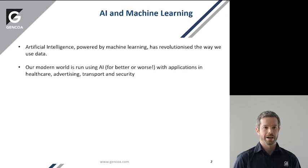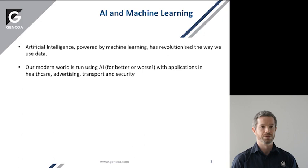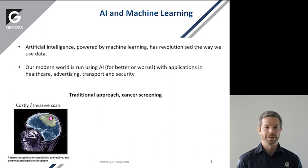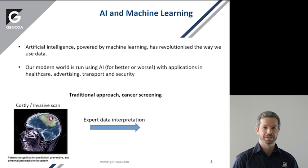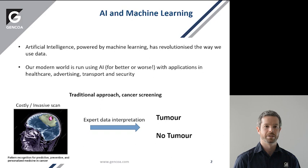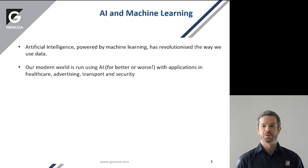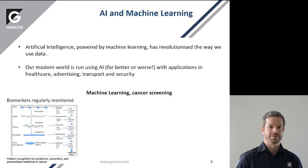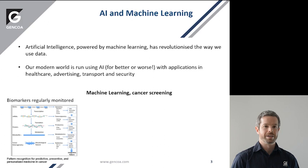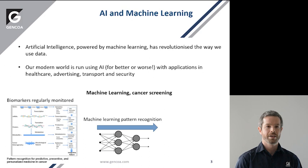To elaborate on that, an example with cancer screening: the traditional approach would be to perform a costly or invasive scan, perhaps based on a doctor's recommendation which is based on a patient's symptoms. This scan would have to be interpreted manually by an expert to determine whether the patient has a tumour or not. This approach can be replicated with AI to yield much faster outcomes — rather than using an invasive scan, you take biomarkers that are regularly monitored throughout the year, and these markers are fed into a machine learning algorithm trained to detect whether they indicate a tumour.